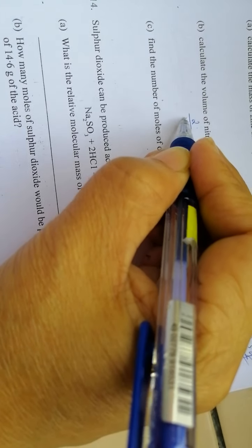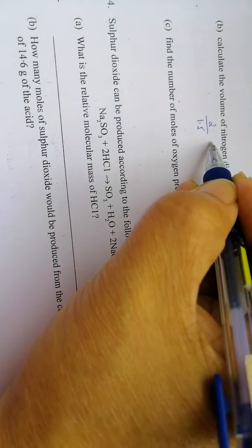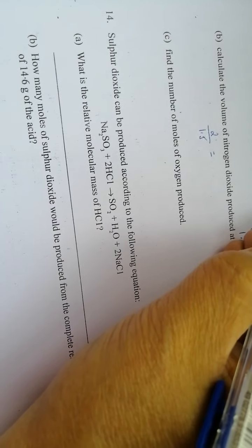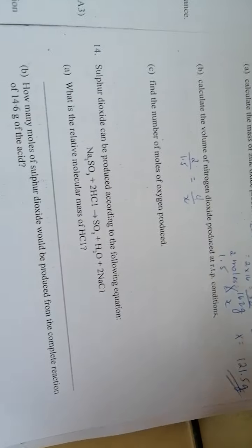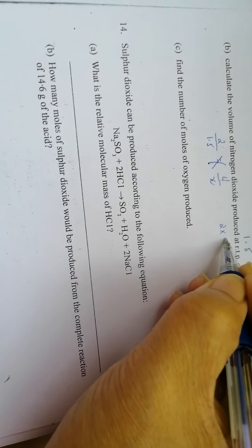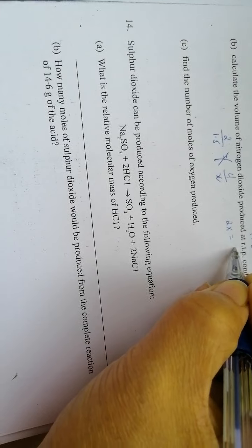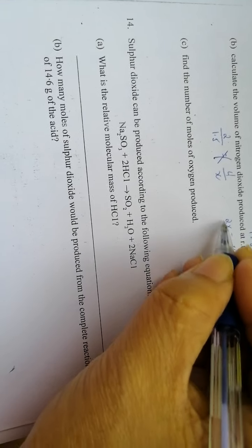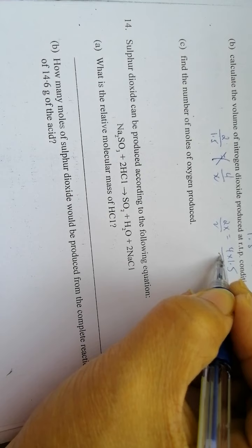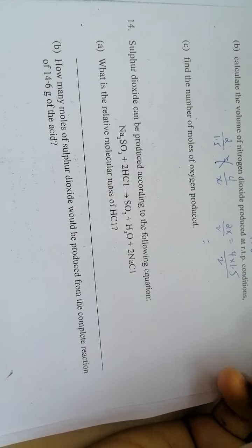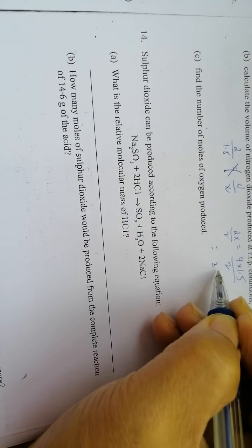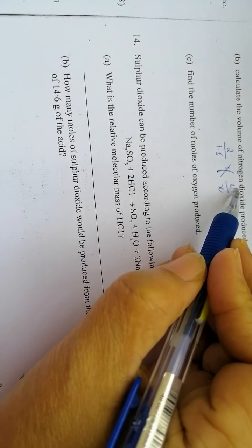2 over 1.5 for the zinc nitrate, so for nitrogen dioxide 4 over X. Then we cross multiply. 2 times X equals 4 times 1.5. Divide both by 2, which equals 3 moles of nitrogen dioxide.